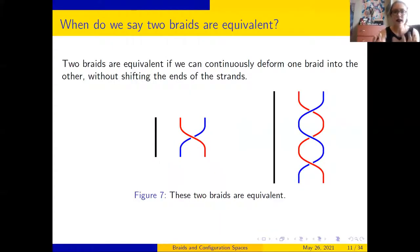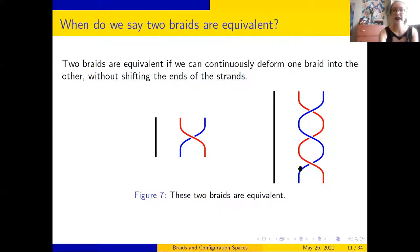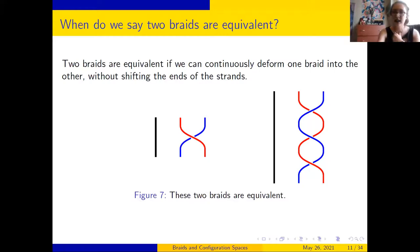If you've ever braided someone's hair or made a friendship bracelet, you're on the right track. So I've got my six strands — the first thing that happens, reading top to bottom, is my second strand crosses over my first strand. Then my fifth strand crosses over my sixth. My third strand crosses over my fourth, and my fourth strand crosses over my fifth. This is the information my braid is telling me; it's very combinatorial in nature. Two braids are equivalent if we can continuously deform one into the other without shifting the ends of the strands.